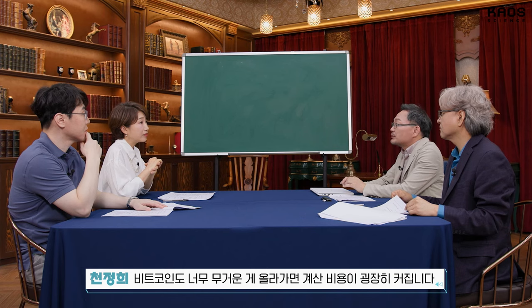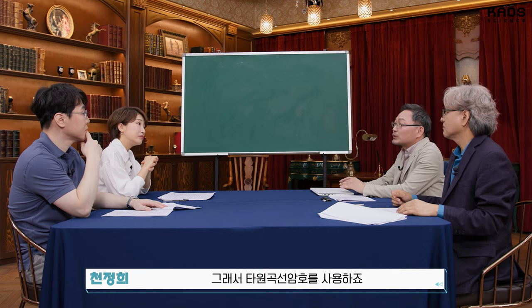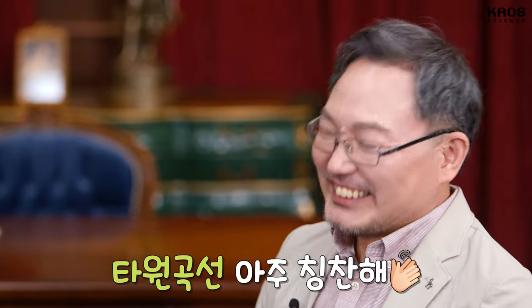대표적인 예가 스마트폰 같은 핸드폰 기계에 암호를 쓰려고 했는데 RSA가 너무 무거워서 쓸 수가 없었어요. 타원 곡선 암호를 이런 데 쓰이게 됐고, 또 최근에 여러분들 아마 많이 아시는 비트코인도 너무 무거운 게 올라가면 비용이 굉장히 커집니다. 거기서도 타원 곡선 암호를 사용합니다. 비트코인 같은 경우는 안전성을 위해서 한 컴퓨터가 계산하는 것 대신 수만 대의 컴퓨터가 계산하는 방식을 택하거든요. 전력이 많이 소모된다는 그런 말씀인가요? 맞습니다. 타원 곡선이 지구를 지키는데 수리반일을 했네요.